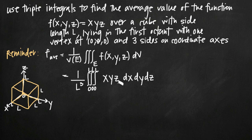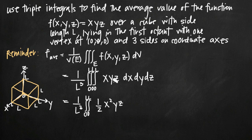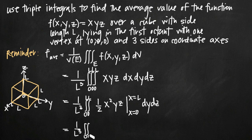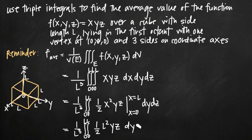Now it's just a matter of evaluating the integral. We evaluate first with respect to x, leaving 1 over l cubed out in front. Integrating xyz with respect to x gives us (1/2)x²yz, evaluated from x = 0 to x = l. Plugging in l for x gives (1/2)l²yz; plugging in 0 gives 0. So we're left with (1/2)l²yz dy dz.